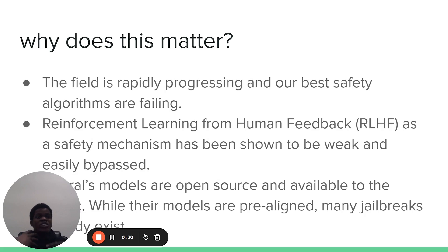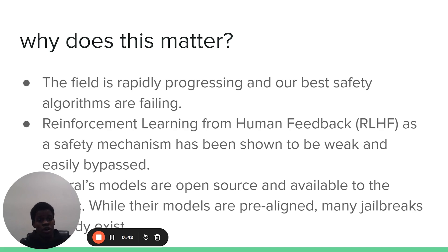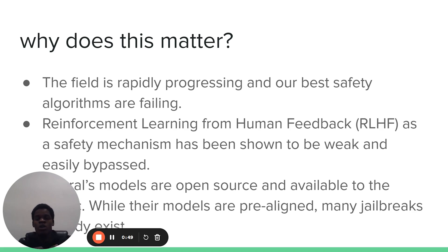So research is moving super fast, and our best safety algorithms are already failing. Reinforcement learning from human feedback is our primary safety algorithm for protecting these large language models, but it's shown to be weak. We have a glut of papers that just show how RLHF can easily be bypassed, and jailbreaks come out almost every month.